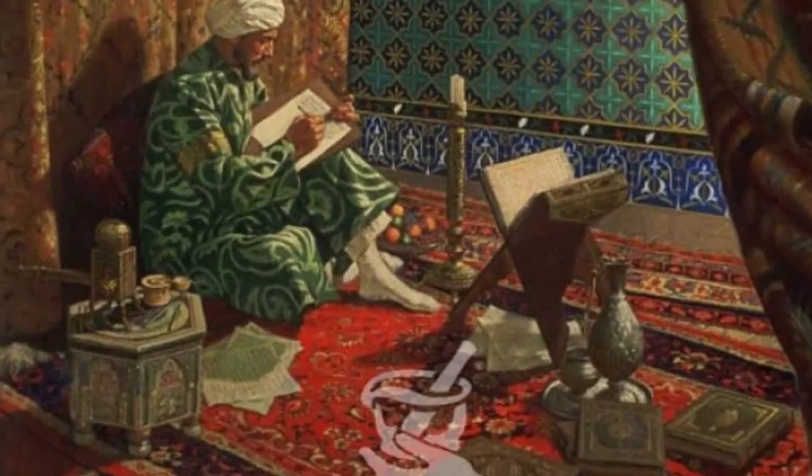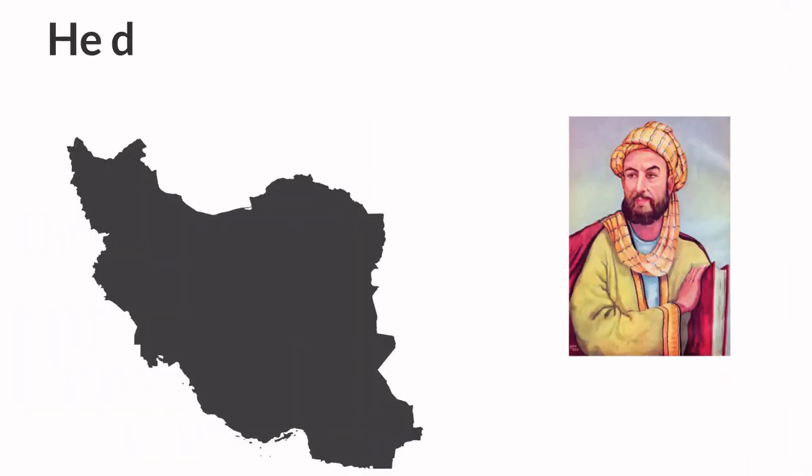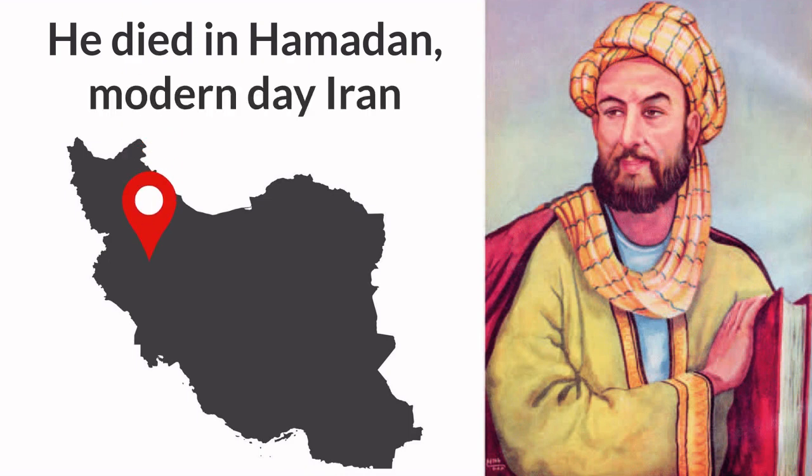Avicenna later relocated to Gurganj. He was moving around a lot in his life, serving different rulers. Eventually, he died in Hamadan, modern-day Iran.